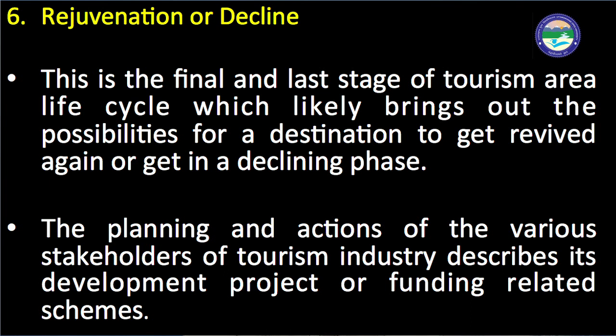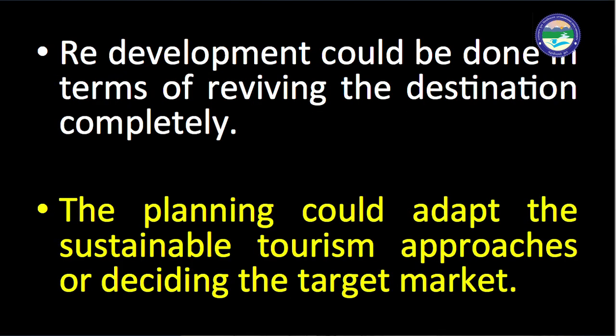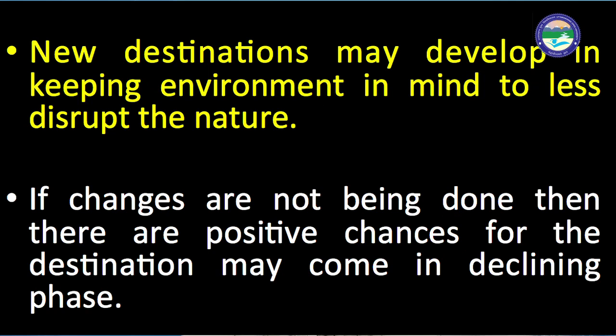The sixth and final stage is where it is decided whether the product will be rejuvenated or declined. This brings out possibilities for a destination to get revived again or enter a declining phase. The planning and actions of various stakeholders describe development projects or funding-related schemes; redevelopment could be done to revive the destination completely. Sustainable tourism approaches may be adopted, and new destinations may be developed with the environment in mind. If changes are not made, there are strong chances the destination will enter a declining phase.